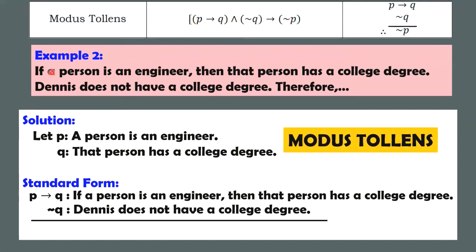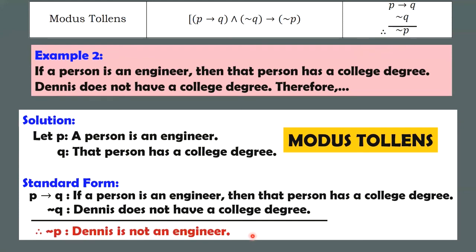This is the form of modus tollens. The form of our example and the form here are very similar. So what is the valid conclusion? The negation of P. It's like the contrapositive — if you have a conditional statement 'if P, then Q,' its contrapositive is 'if not Q, then not P.' So you already know the conclusion: not P. All you have to do is negate this. So you conclude that that person is not an engineer — or, Dennis is not an engineer.